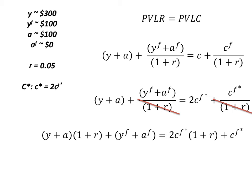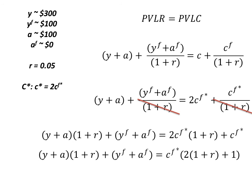Feel free to stop this video and do the algebra out yourself to make sure you're understanding each step. On the right-hand side of this equation we are going to factor out CF, just like in the last example we factored out C. By doing so we factored 2·(1+r) from the first term and 1 from the second term, so the right-hand side is CF* times 2·(1+r) plus 1.